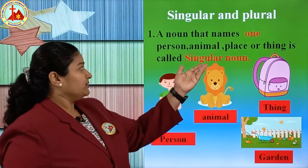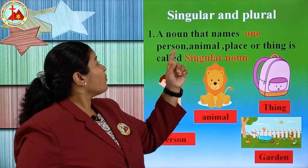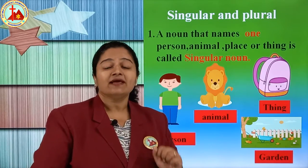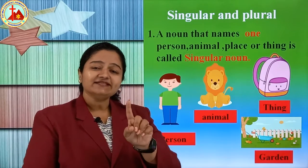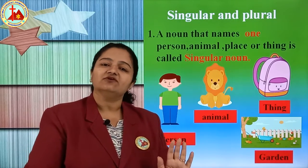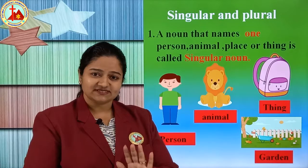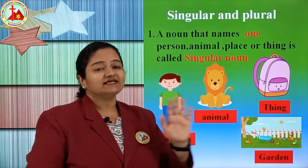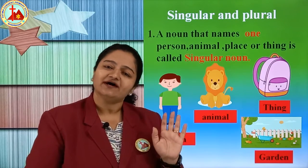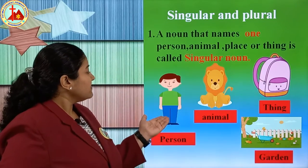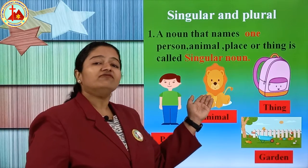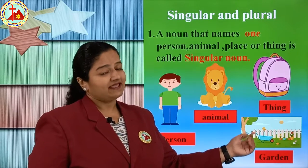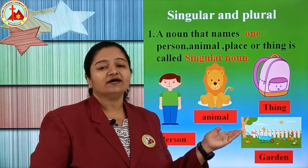A noun that names one person, animal, place or thing is called a singular noun. It means only one thing. If one person, one animal, one thing, or one place is there, that is called a singular noun. Here you can see a picture of one man, one animal, one thing, and one place — a garden. These are all examples of singular noun.